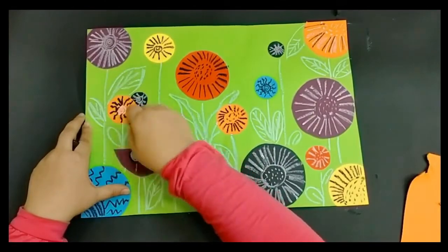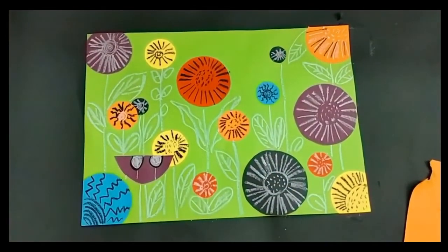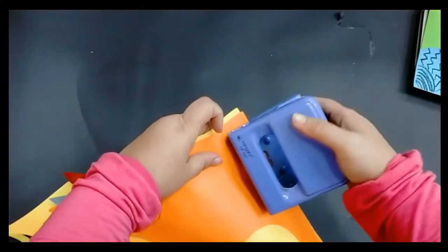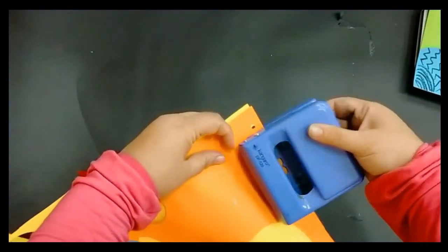Use white oil pastel to add leaves to some of the flowers to fill some of the negative space around the flowers. You can also add leaves extending off the page in areas that look a little bare, even if there isn't a flower there.